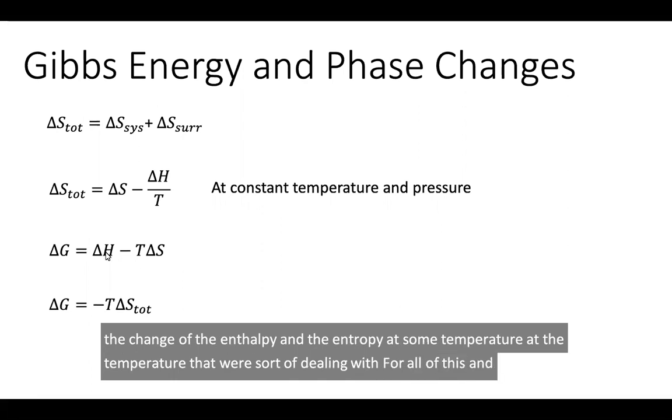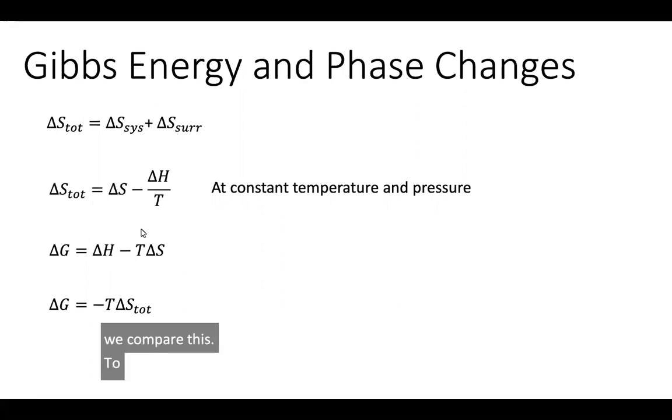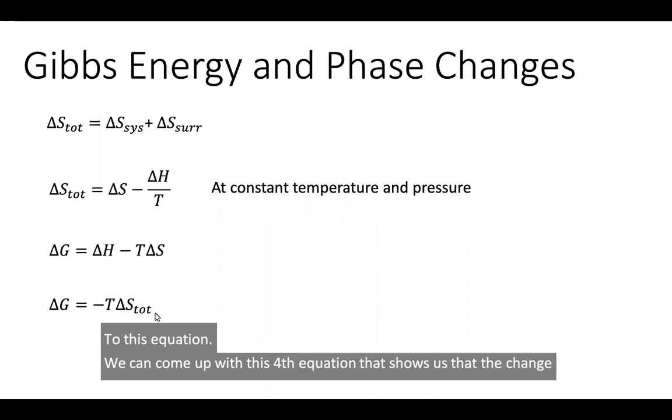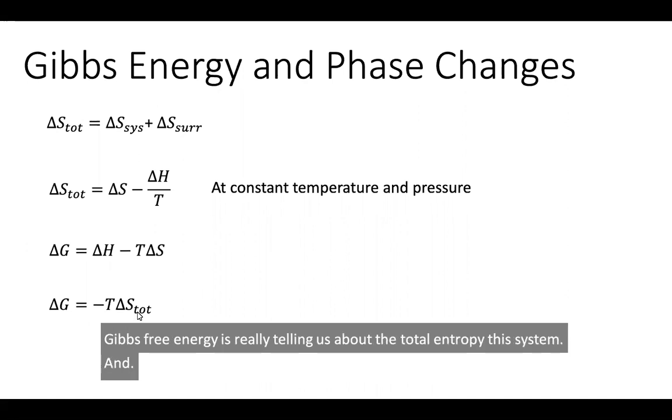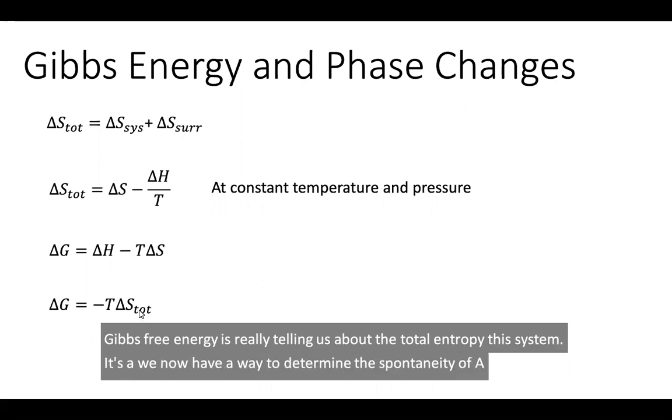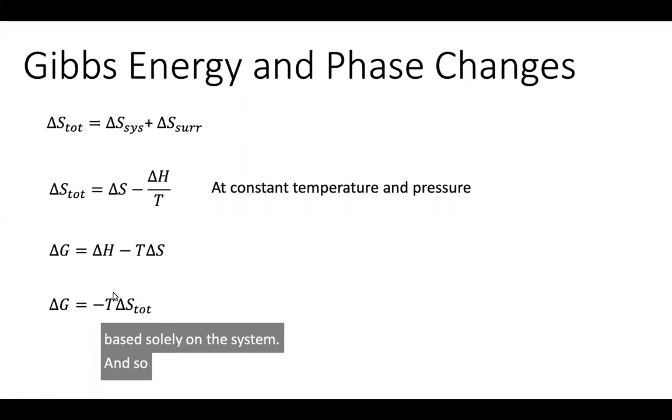When we compare this to this equation, we can come up with this fourth equation that shows us that the change in Gibbs free energy is really telling us about the total entropy of the system. We now have a way to determine the spontaneity of a process based solely on the system. We also see that they're going to have opposite trends because of this negative sign.